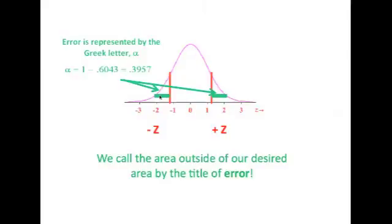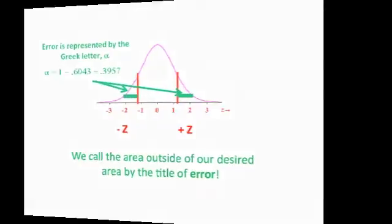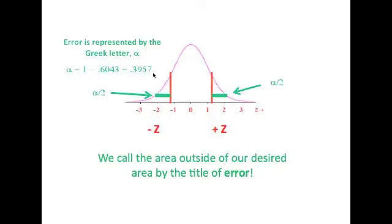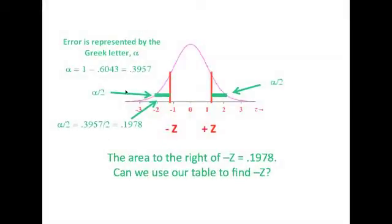Now, keep in mind that the 0.3957, half of it lies here and half of it lies here. Well, we're almost there. We started with an area here. And using that known area of 0.6043, we were able to trap alpha, which is the error. And we knew that we had 0.3957 in error. That's the amount outside the known area. Now, then, we need to note that this error is divided in half and can be represented symbolically as alpha divided by 2. So we have half of alpha over here and we have half of alpha over here. And to find out how much error is right here, alpha over 2, we just take our total alpha, 0.3957, and divide it by 2. And we come out with a value of 0.1978.